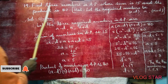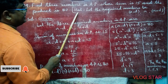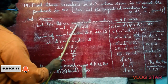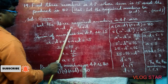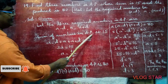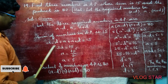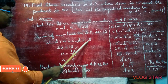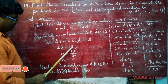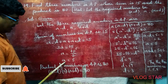Problem 19. Find 3 numbers in AP whose sum is 15 and product is 80. Hint: let the numbers be A minus D, A, A plus D. Solution: let the three required numbers in AP be A minus D, A, and A plus D. Their sum equals 15, so (A minus D) plus A plus (A plus D) equals 15. The D terms cancel, giving 3A equals 15, so A equals 5.